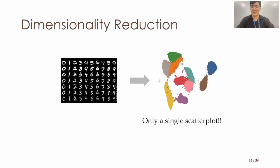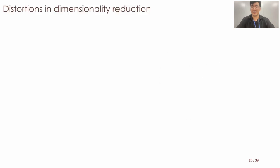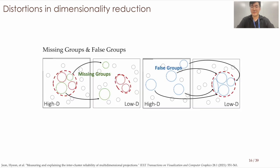However, during this transformation from high to low dimensions, distortions inherently occur. In other words, the cluster structure in dimensionality reduction may be inaccurate. For example, a recent work categorized the distortions in dimensionality reduction into two types: missing groups and false groups. While missing groups represent clusters from the original data that split in the reduced space, false groups depict originally separated clusters that are merged during the reduction.